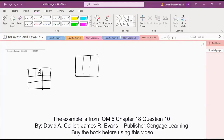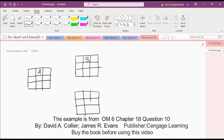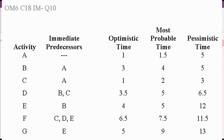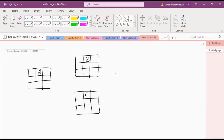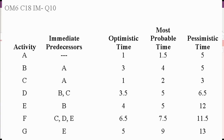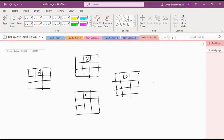Activity A is a predecessor for B and C. B and C are predecessors for D. B is also a predecessor for E.